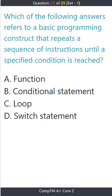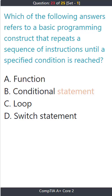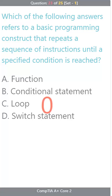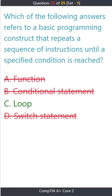Question 23: Which of the following answers refers to a basic programming construct that repeats a sequence of instructions until a specified condition is reached? A) function. B) conditional statement. C) loop. D) switch statement. The correct answer is C: loop.